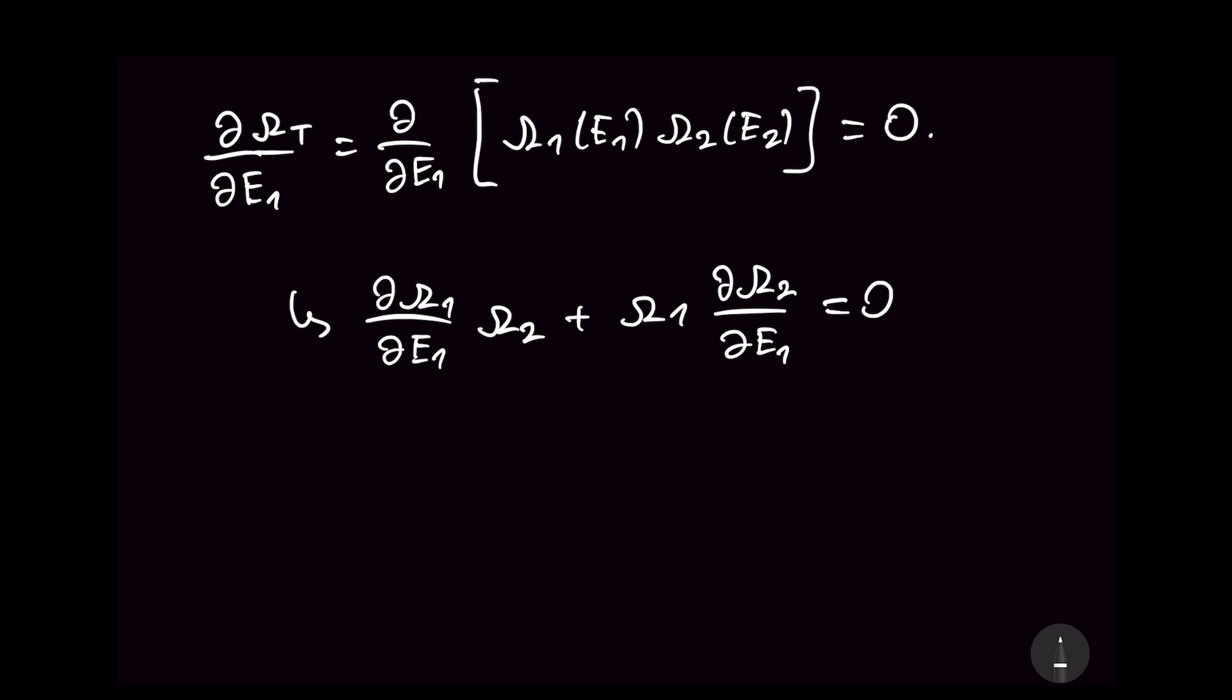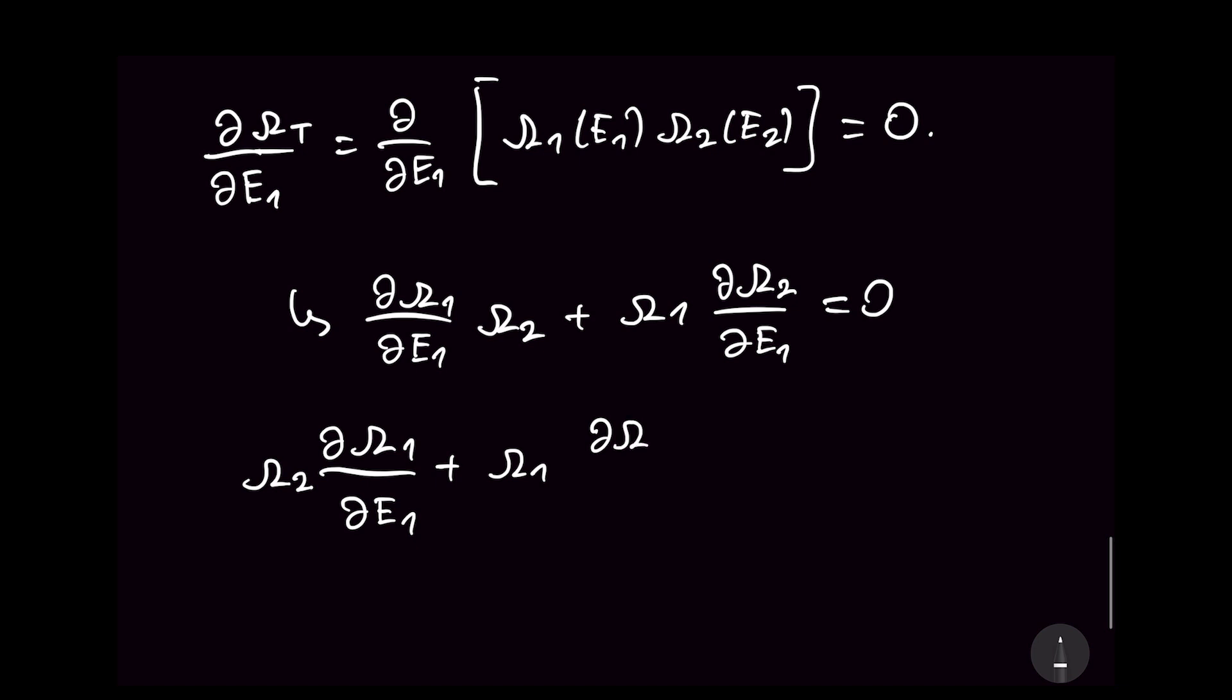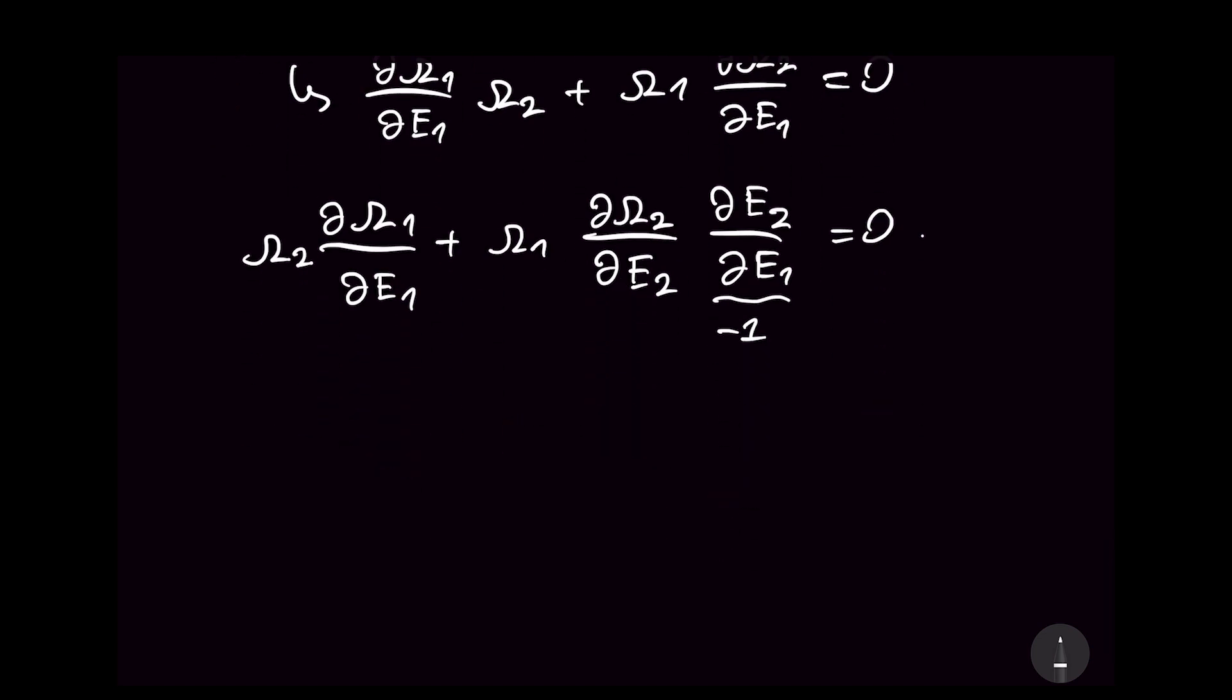Now we can use a chain rule. So this side is just fine. Let me also just write this on the left. Omega_1. And all we have to do is write a chain rule. So this is ∂omega_2 with respect to E2, and then we have ∂E2 with respect to E1 equals 0. Now we already saw that this is minus 1. So let's just toss this equation onto the right side. And we can get omega_2 ∂omega_1/∂E1 is equal to omega_1 ∂omega_2/∂E2.